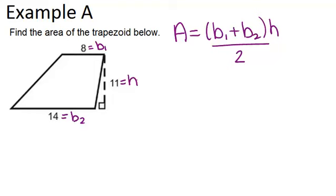So now we just need to substitute those three values into the formula. So the area will be 8, which is base 1, plus 14, which is base 2, times the height, which is 11, divided by 2.